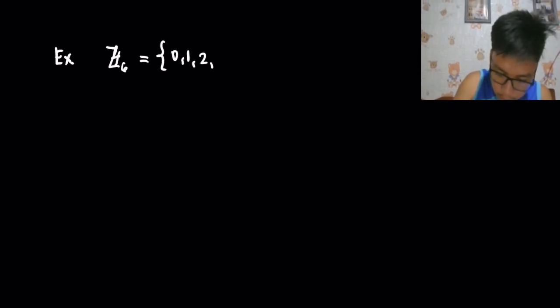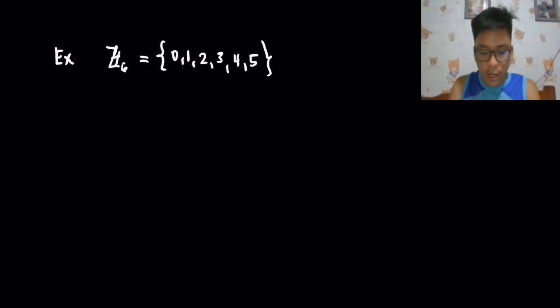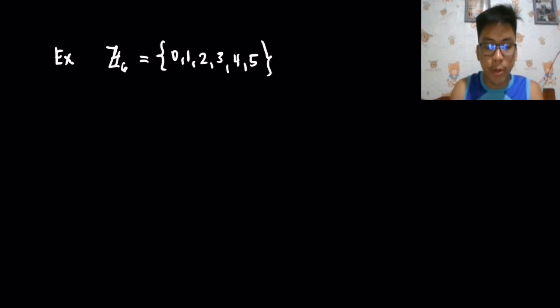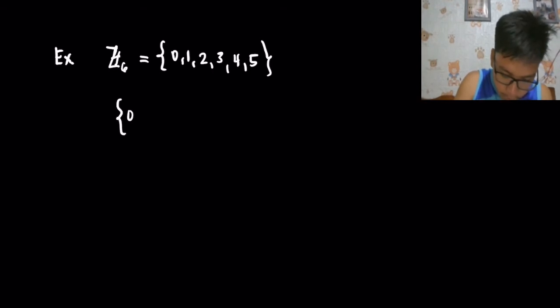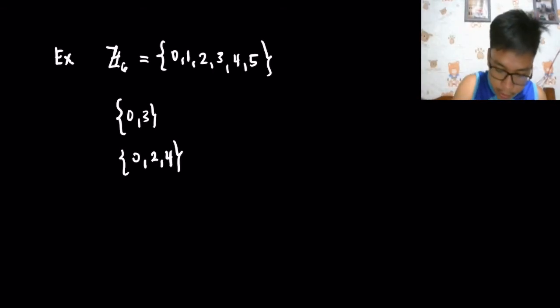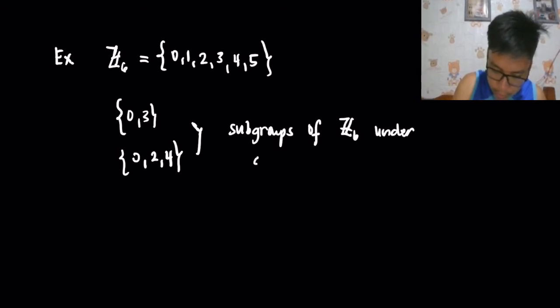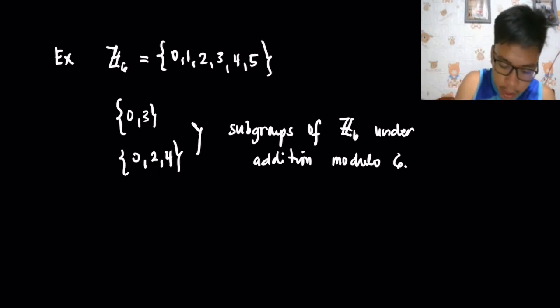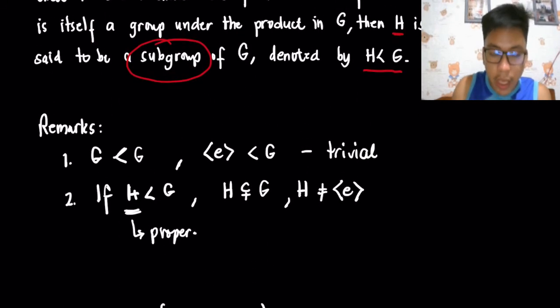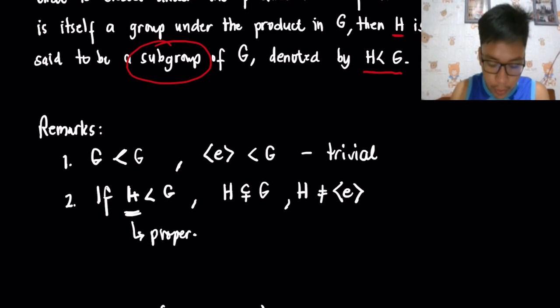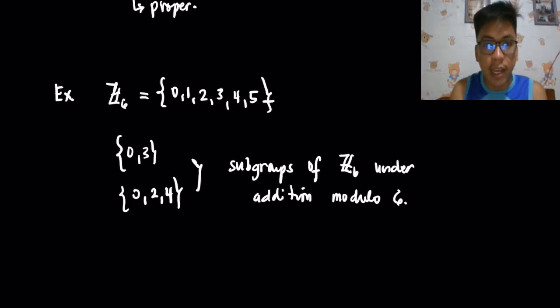Let's consider an example. Let's say we have Z6, which contains the elements 0, 1, 2, 3, 4, 5 — equivalence classes of numbers. The sets {0, 3} and {0, 2, 4} are actually subgroups of Z6 under addition modulo 6. The requirement for a subgroup is that it must be a group and a subset of G. Z6 is a group — I've already discussed what a group is in my previous video, so you can check that.